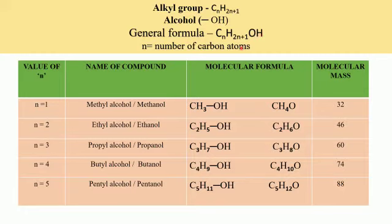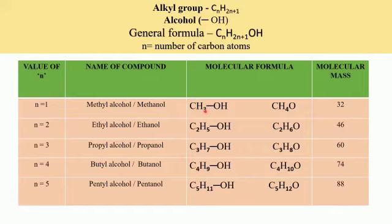N is the number of carbon atoms. We shall begin with the value of N equal to 1. If N equals 1, we get the formula CH3OH — that is the alkyl group with one hydrogen less, and the place of that hydrogen is taken up by the alcohol functional group. We can also write it in the form CH4O.